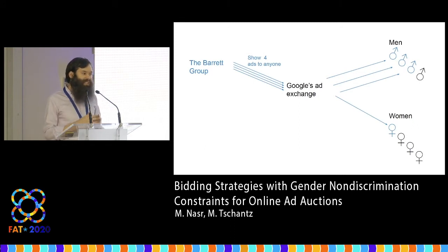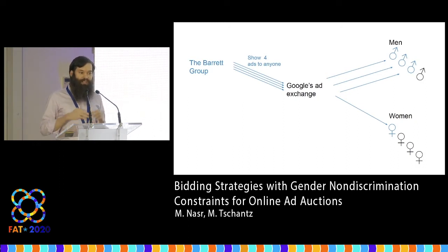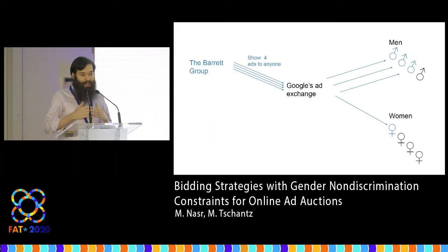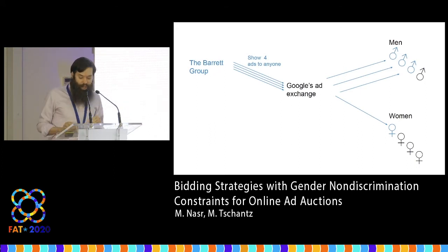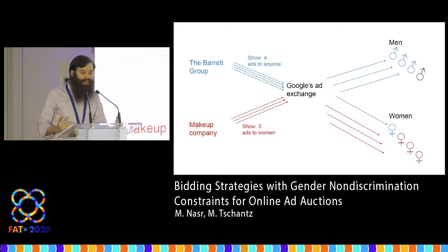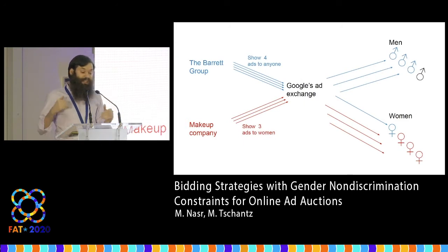This could have happened because Google's ad exchange runs a complicated real-time auction. When ad slots become available on websites, the Google system offers those slots to a bunch of advertisers who bid on them in real-time. So some other advertiser, say a makeup company, could have said 'show my ads only to women' and outbid the Barrett group but only for the women — pushing the Barrett group towards men.